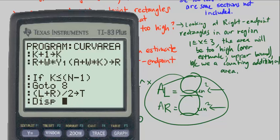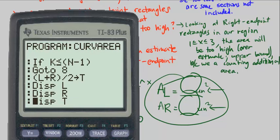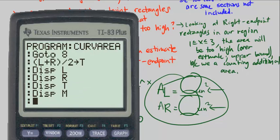Otherwise, compute the trapezoidal area. Display L, R, T, and M. So that ends for us, CPM Precalculus Chapter 2, Number 143.